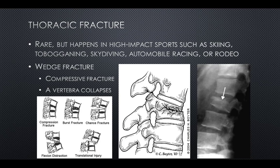Wedge fractures are the most common type of thoracic fracture — a compressive fracture on the anterior surface of the vertebrae where the vertebrae collapses anteriorly. If the fracture is severe enough, the spinous process may also open up, resulting in a chance fracture.